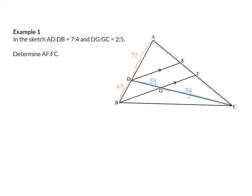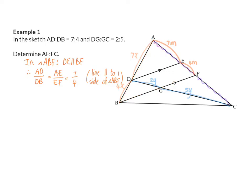For this manipulation, I need more information on the line AFC. So I'm going to start with the first given ratio, which is AD/DB, and I'm going to try to get that on the line AF. So I'm going to use triangle ABF. In this triangle, we have DE parallel to BF, and that means we can say that AD over DB is the same ratio as AE over EF, and that will be 7 over 4. My reason: line parallel to one side of the triangle.